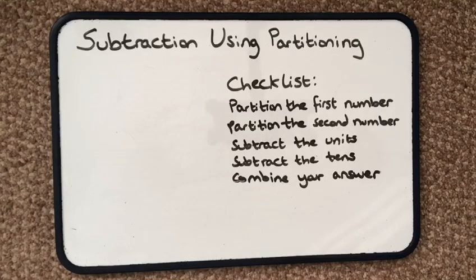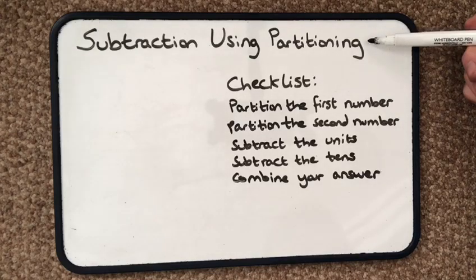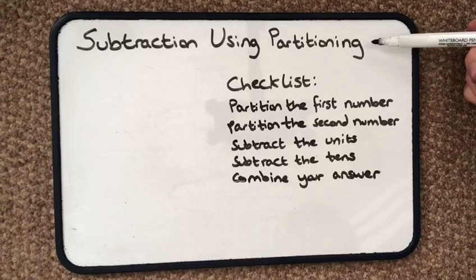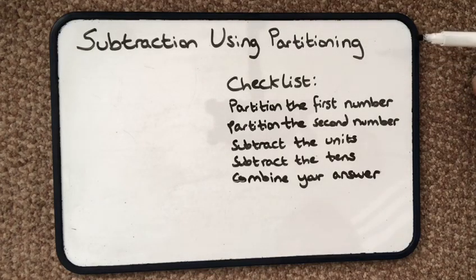So we're going to subtract using the partitioning method. This big word, partitioning, just means to break up the numbers into their ones, their units and their tens. If you've got big numbers, you'll then break up into the hundreds as well.